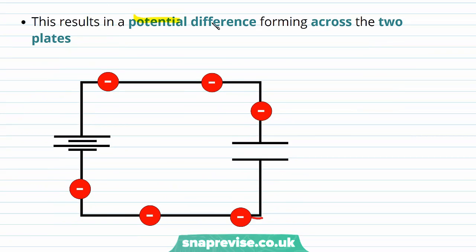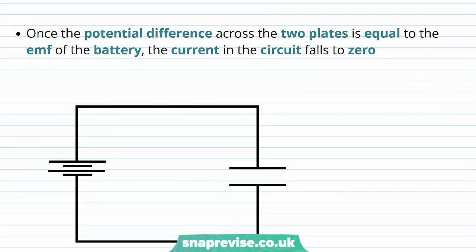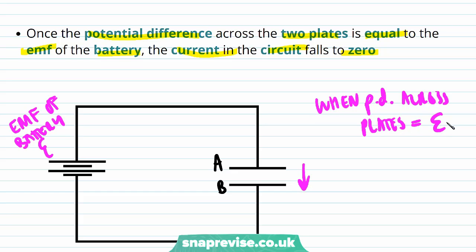This results in a potential difference forming across the two plates. The different amounts of charge on plates A and B, due to the flow of electrons away from plate A and onto plate B, sets up a potential difference. Once the potential difference across the two plates is equal to the EMF of the battery, the current in the circuit falls to zero — no more current can flow.